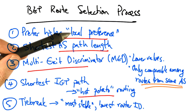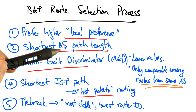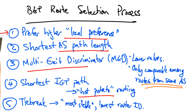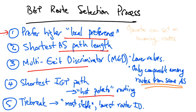Let's now take a closer look into local preference, AS path length, multi-exit discriminator, and hot potato routing. As mentioned, the first step in the route selection process is for routers to prefer routes with higher local preference values. An operator can actually set the local preference value on incoming BGP route advertisements to affect which route a router ultimately selects.